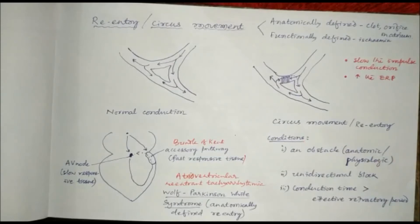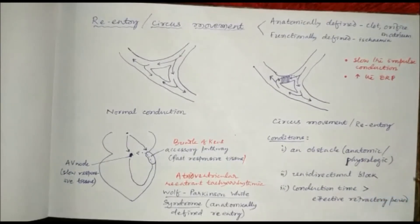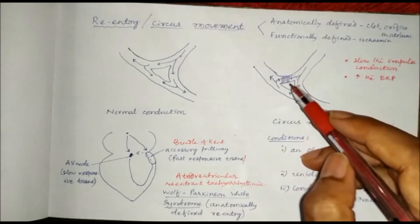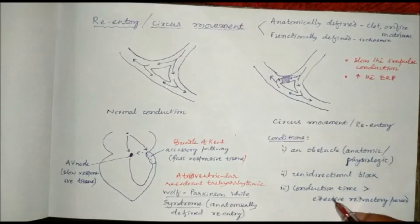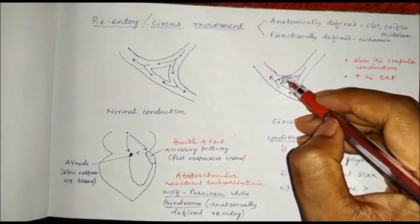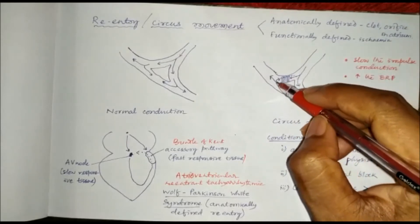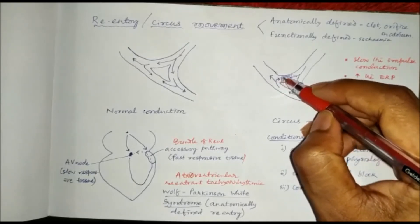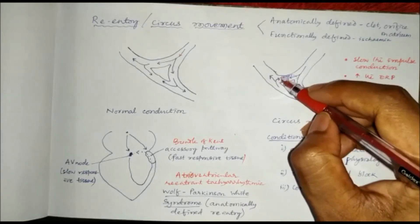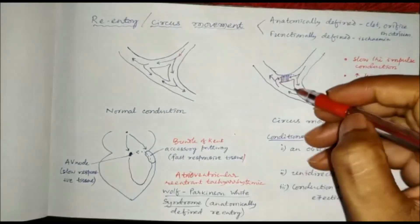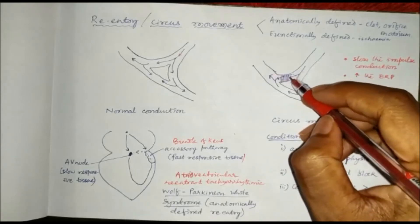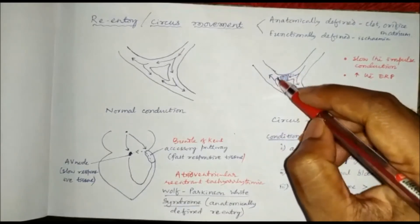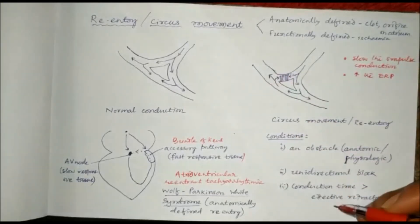The conditions for arrhythmia due to re-entry or circus movement are: first, one obstacle will be there, which may be anatomic or physiologic. Second, there must be a unidirectional block — no bidirectional block. Third, conduction time should be more than the effective refractory period. And if the conduction time is less than the effective refractory period, the impulse will reach and re-enter again. So for re-entry, these three conditions have to be fulfilled.